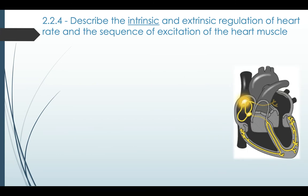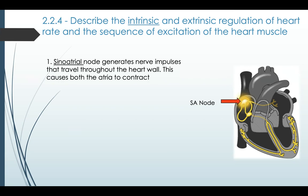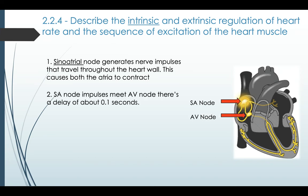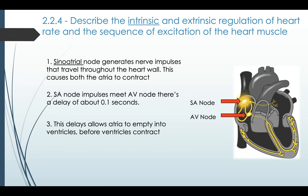The order in which this happens is as follows. The sinoatrial node generates nerve impulses that travel through the heart wall, causing the atria to contract. There's then about a 0.1 second delay when the signal reaches the AV node. The reason for this delay is to make sure that the atria is fully empty of blood and the ventricles are filled before they contract, so they can push blood to either the lungs or the body.